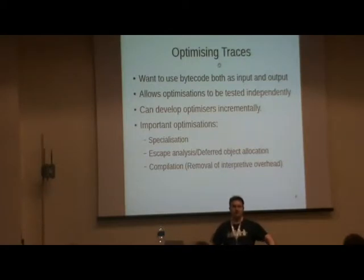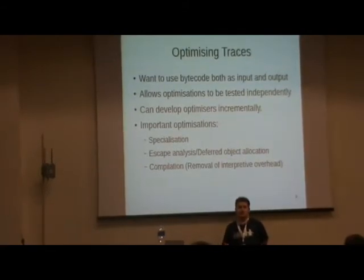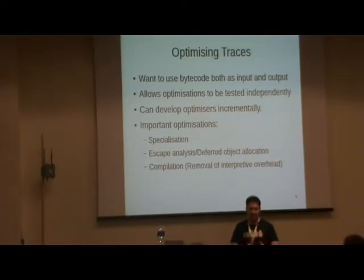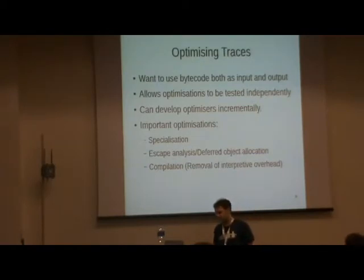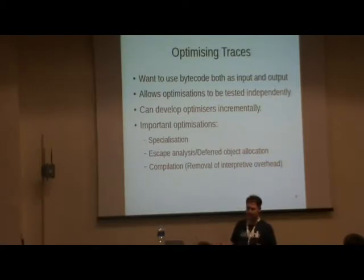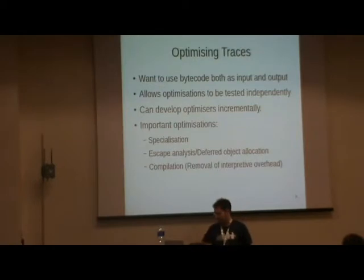We've got our traces, but we need to optimize them. The main things we want are to keep everything in the interpreter, have reportability, and be able to plug in these optimization stages, test them independently, and add things incrementally. There are three important optimizations: specialization, escape analysis / deferred object allocation, and compilation to machine code. Even without compilation, we'll still get some speedup. Unfortunately, we can't trace the Python bytecodes directly, because Python bytecodes do a lot — the semantic context of a Python bytecode is big.